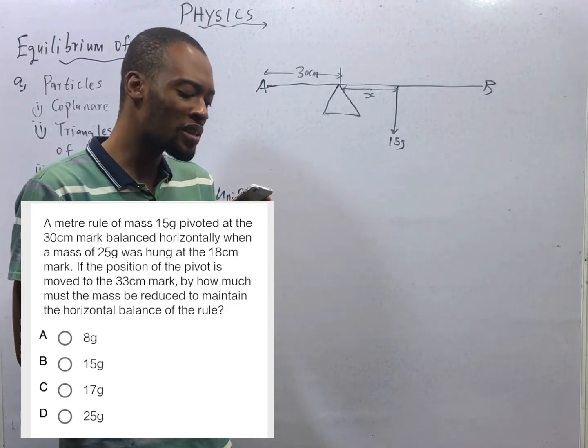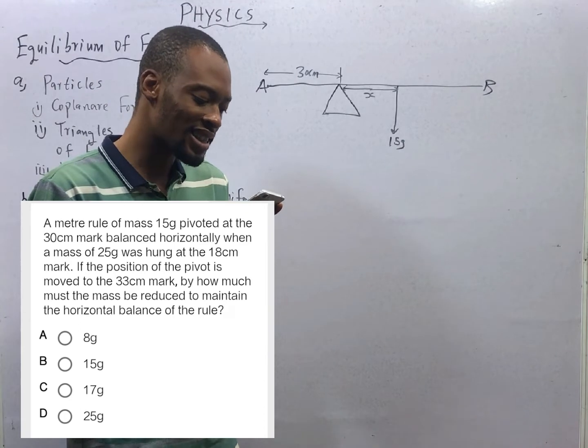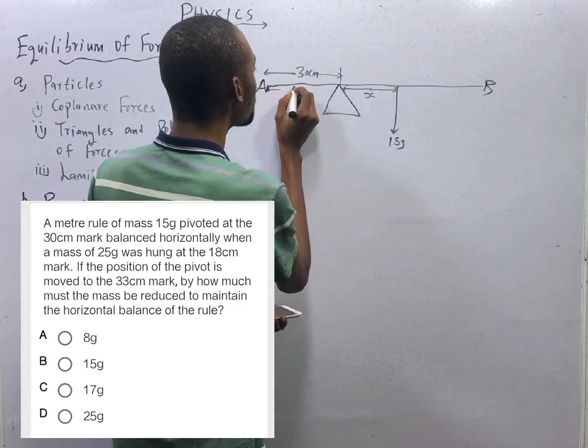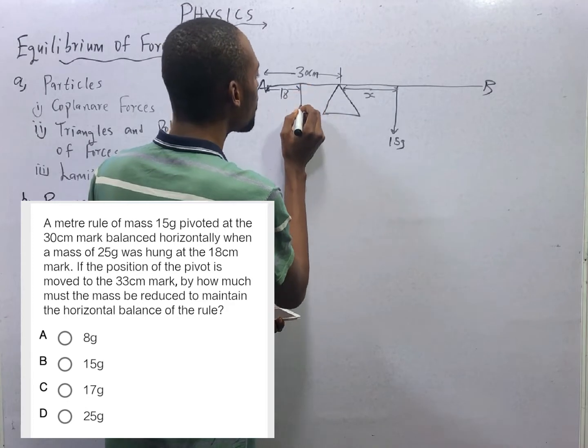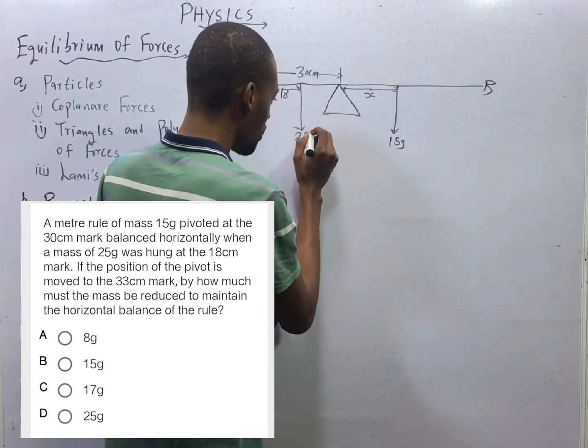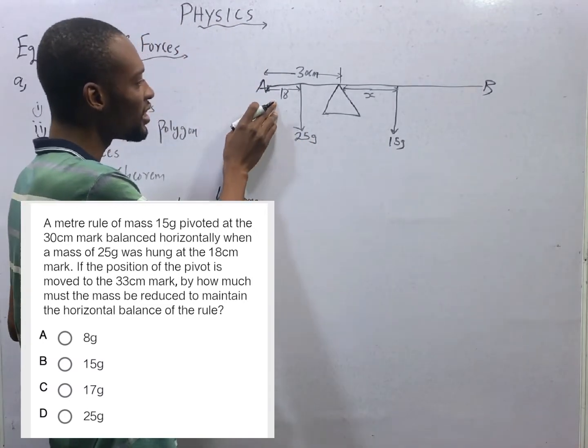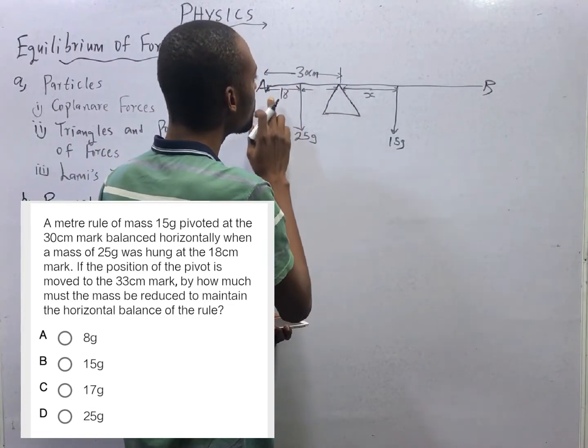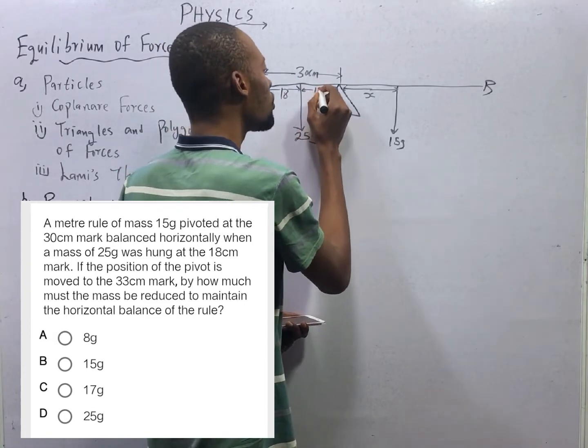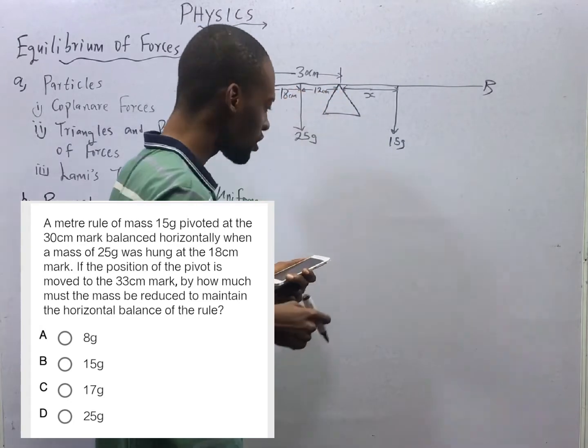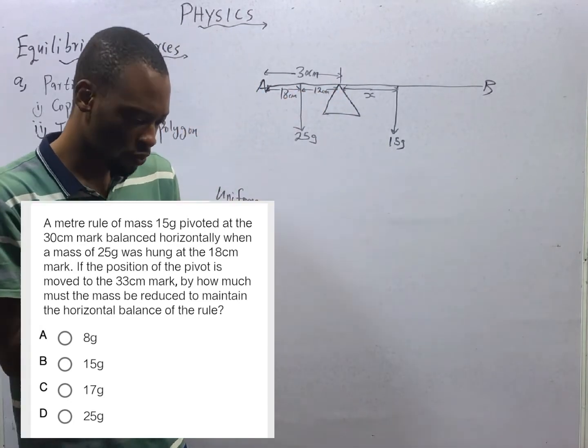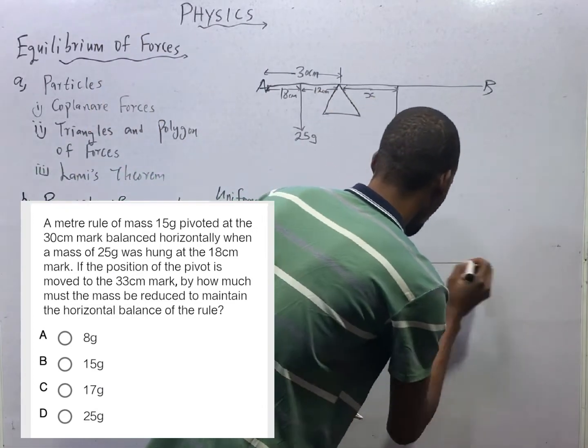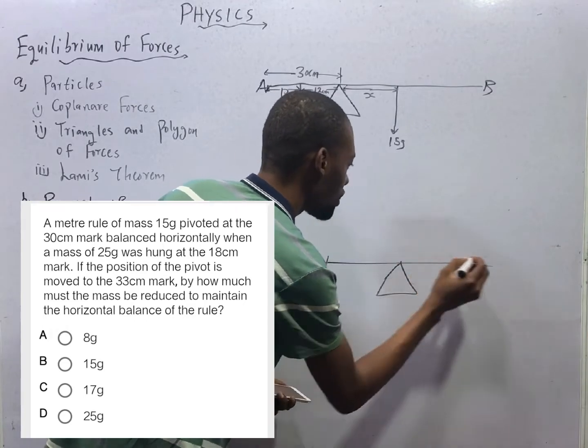For now, we know that there is a mass of 15 grams. A meter rule of mass 15 grams is pivoted at 30 cm. It means there is a knife edge here around anywhere you choose, holding it like this. And it is at 30 cm. So from the beginning of the meter rule to that mark is 30 cm. Then there is 15 grams here. And the distance from here to here, we are not given. We don't know, but let's represent it with S.